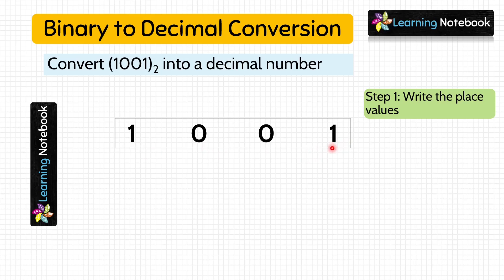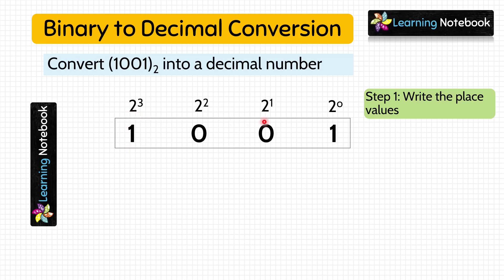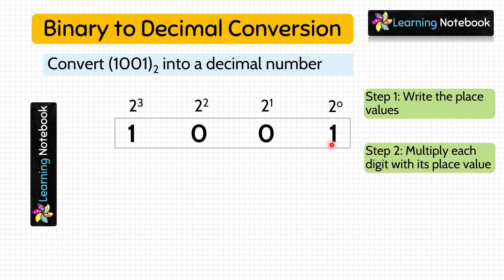Starting from the right-hand side: place value of 1 is 2 raised to the power 0, place value of the next 0 is 2 raised to the power 1, place value of the next 0 is 2 raised to the power 2, and place value of the leading 1 is 2 raised to the power 3. We have now written the place values of all the digits of the binary number 1001.